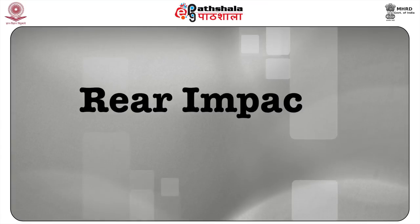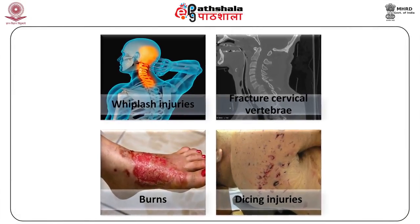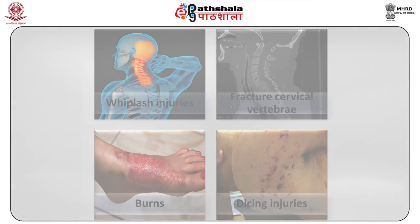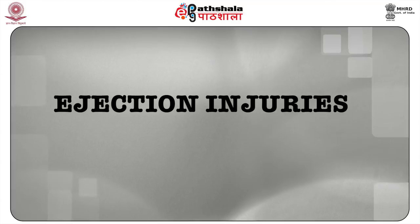Rear impact is the least common form of fatal automobile accident; unless the impact is at very high speed, fatalities are rare. Injuries may include whiplash injuries, fractured cervical vertebrae, or burns in high-velocity injuries, as well as deformation or rupture of the petrol tank and sometimes dicing injuries. Ejection injuries are very dangerous and fatal. The victim may sustain head injury by striking against the road, dividers, poles, or stationary objects, and may also sustain injuries over projecting surfaces like knees and elbows.